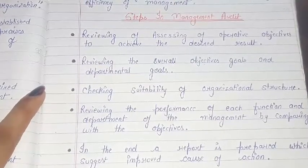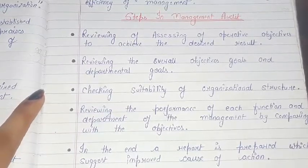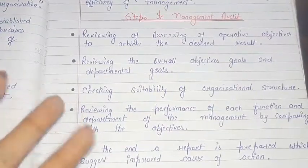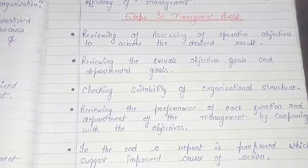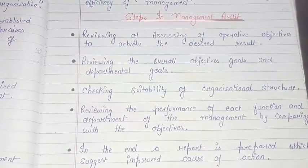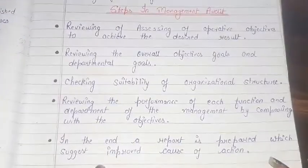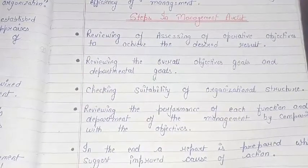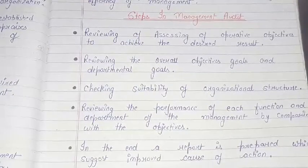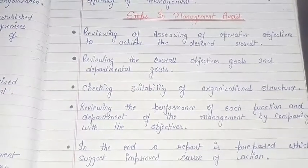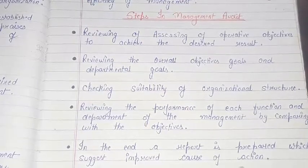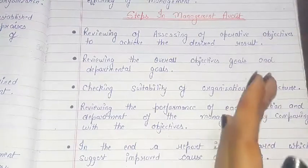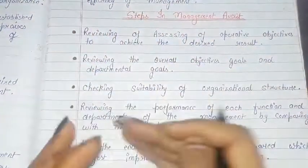The next step is checking the suitability of the organizational structure by comparing it with the objectives. This means that every department's functions and performance will be checked and reviewed, and the objective and the performance will be assessed accordingly.